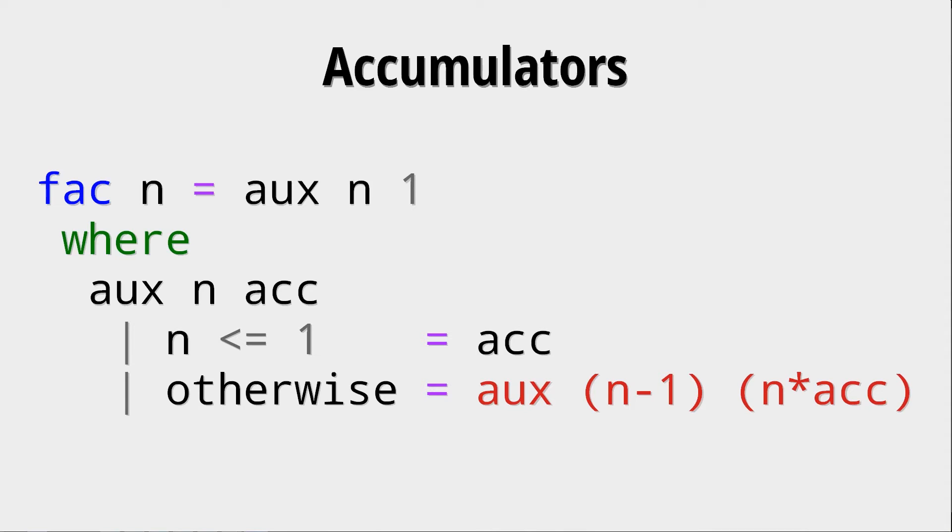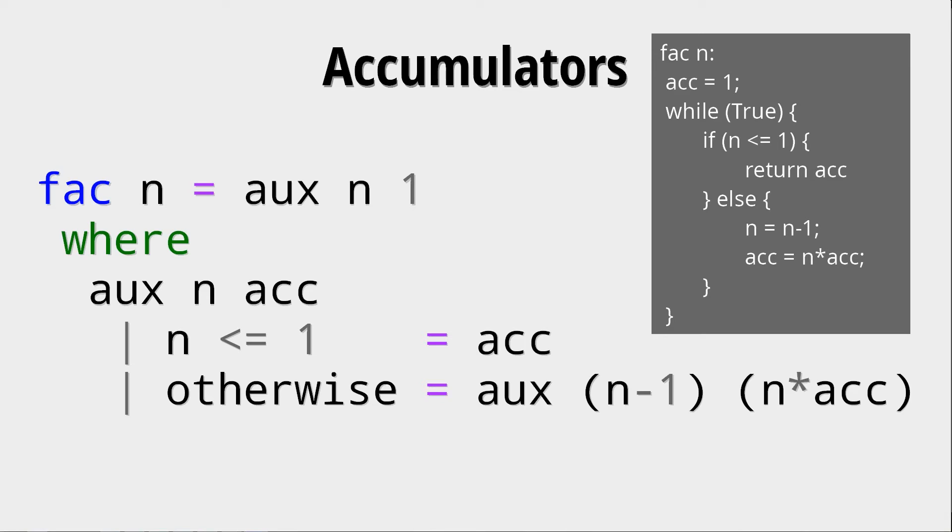So this is what we call a tail recursive function since it has no operation after its recursive call anymore. This is very important because clever compilers can basically rewrite such a function as an imperative function for example with a while true loop.